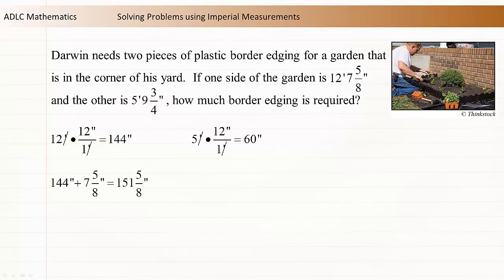Similarly, 5 feet is equal to 60 inches. Add this to the remaining part of the measurement, 9 and 3 quarters inches. 5 feet 9 and 3 quarters inches is equal to 69 and 3 quarters inches.